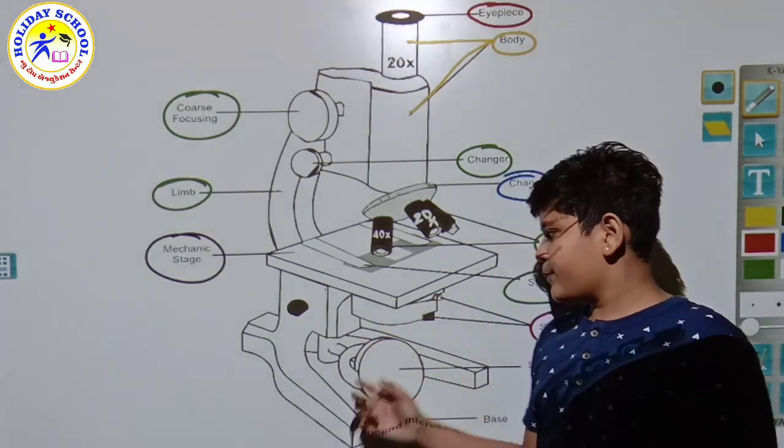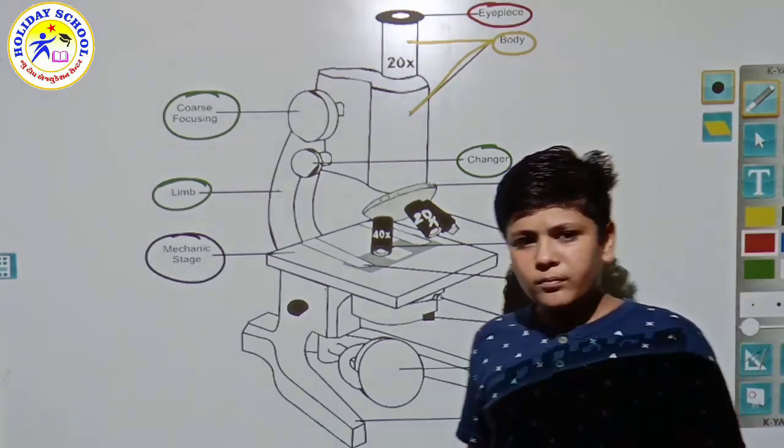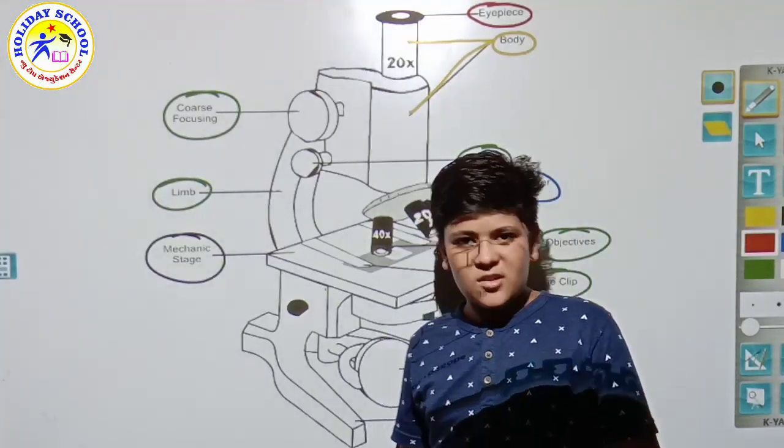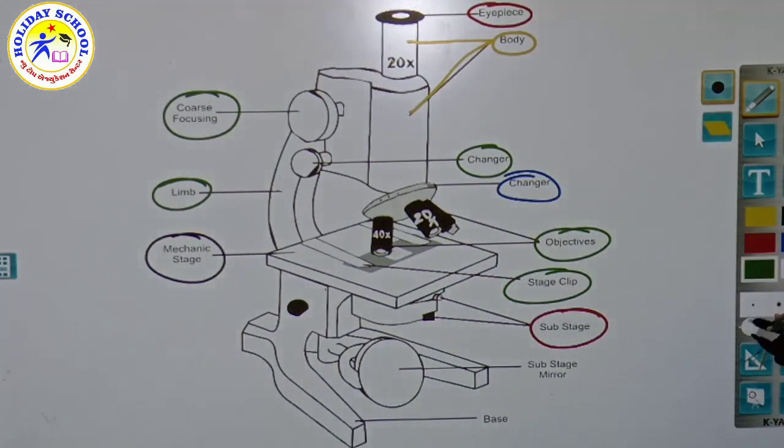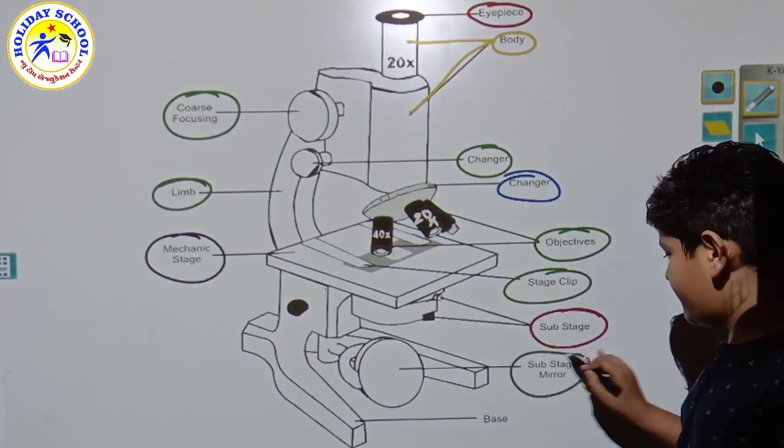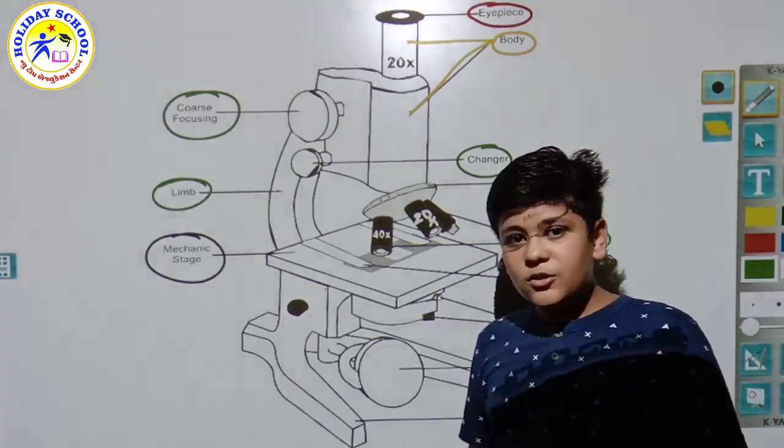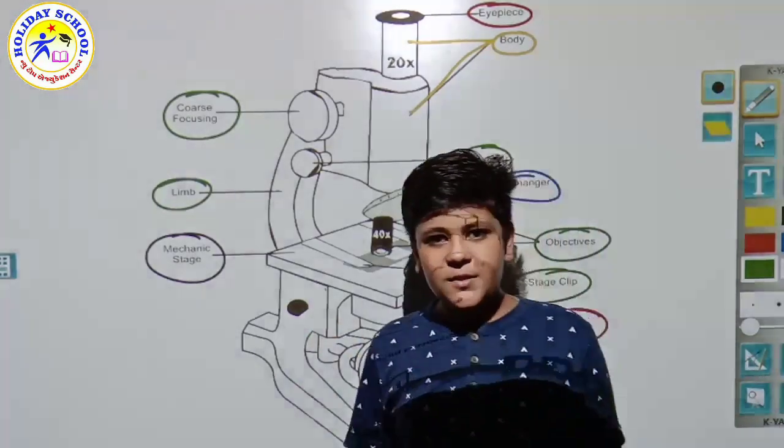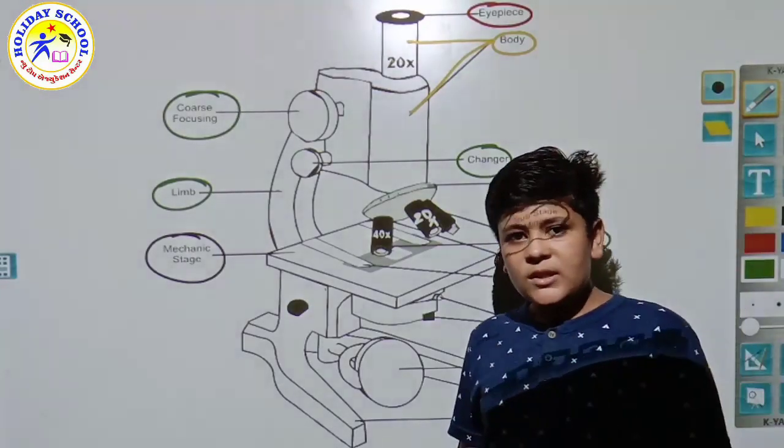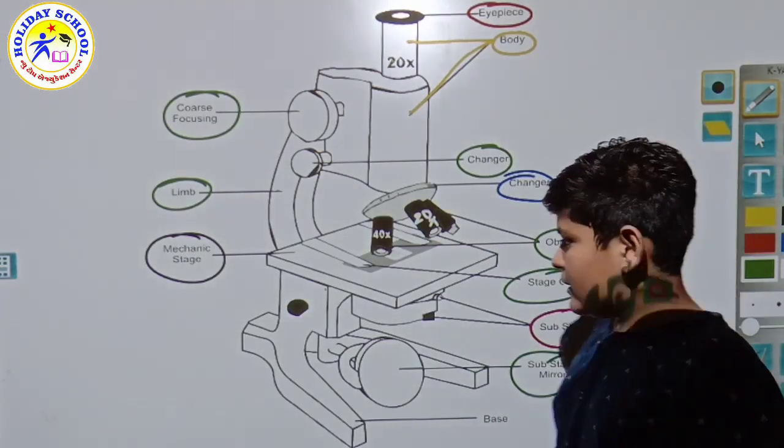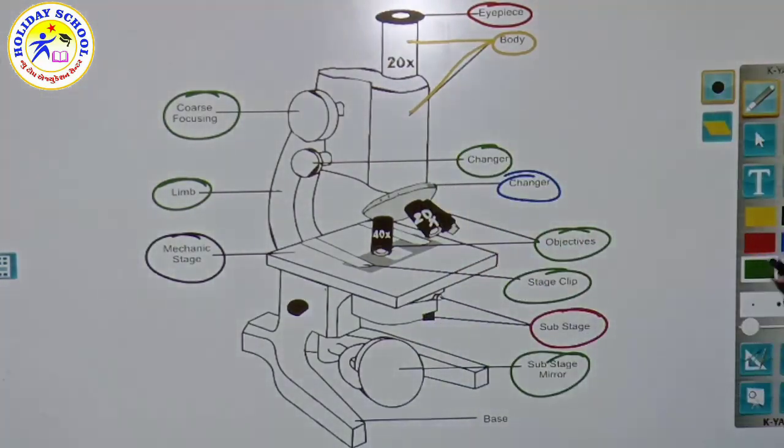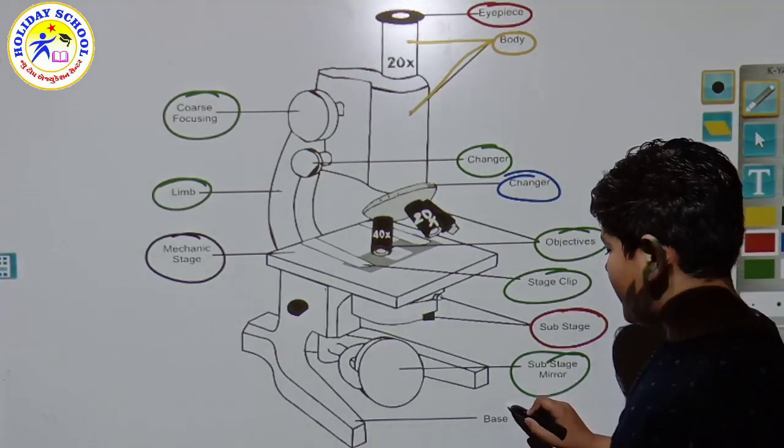After that, the sub-stage. The sub-stage is also given there, and it's useful like the main stage. The sub-stage contains a sub-stage mirror. The mirror is not needed for the mechanical stage, but for the sub-stage the mirror is needed. Another name is also given: the condenser. Here the base is also given - this base handles the whole microscope.